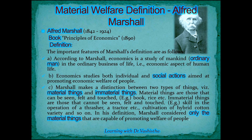Marshall's definition is based on three main points. First, he talked about the economic aspects of an ordinary man's life. Second, he talked about both individual and social action — an individual's social interaction to bring up his welfare. Third, he talked about material things and immaterial things, mainly emphasizing material things — those that can be seen, felt, or touched, like books or rice — and how they contribute to human welfare.